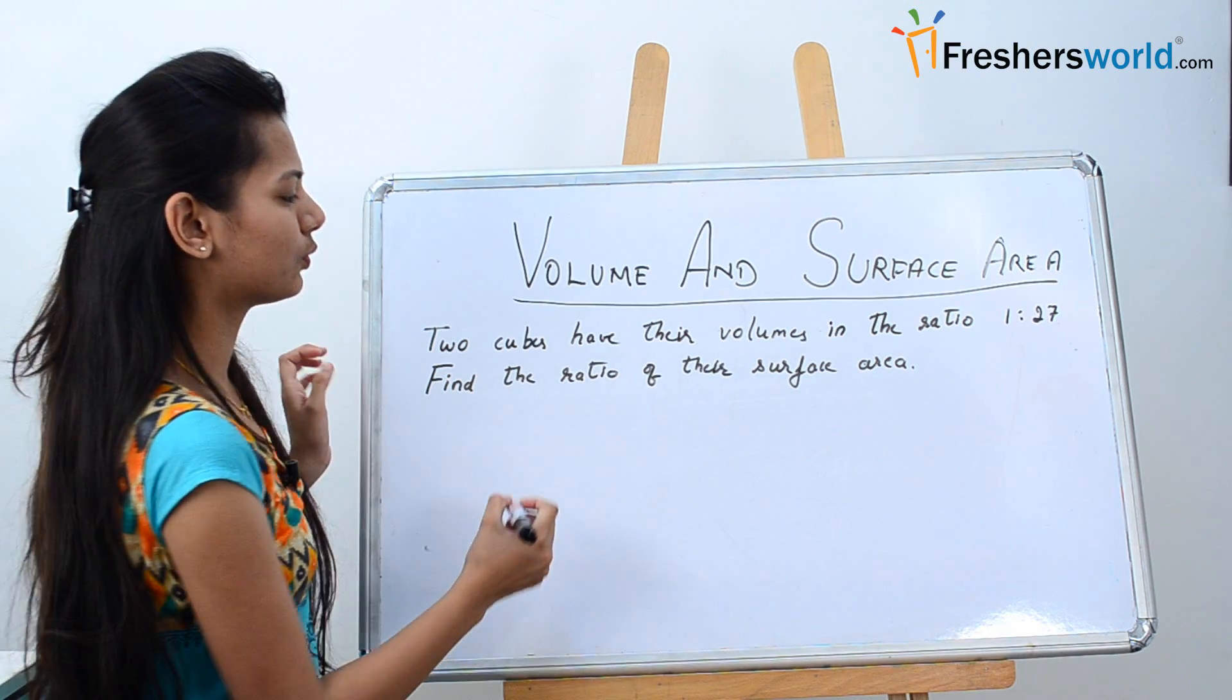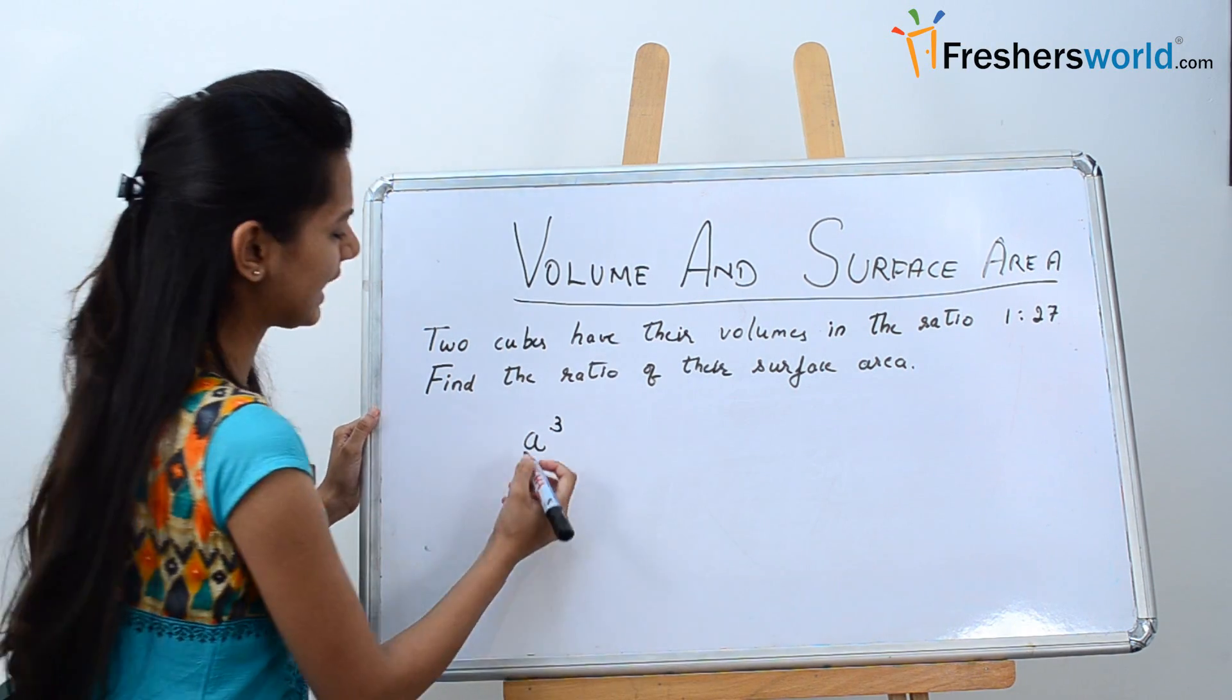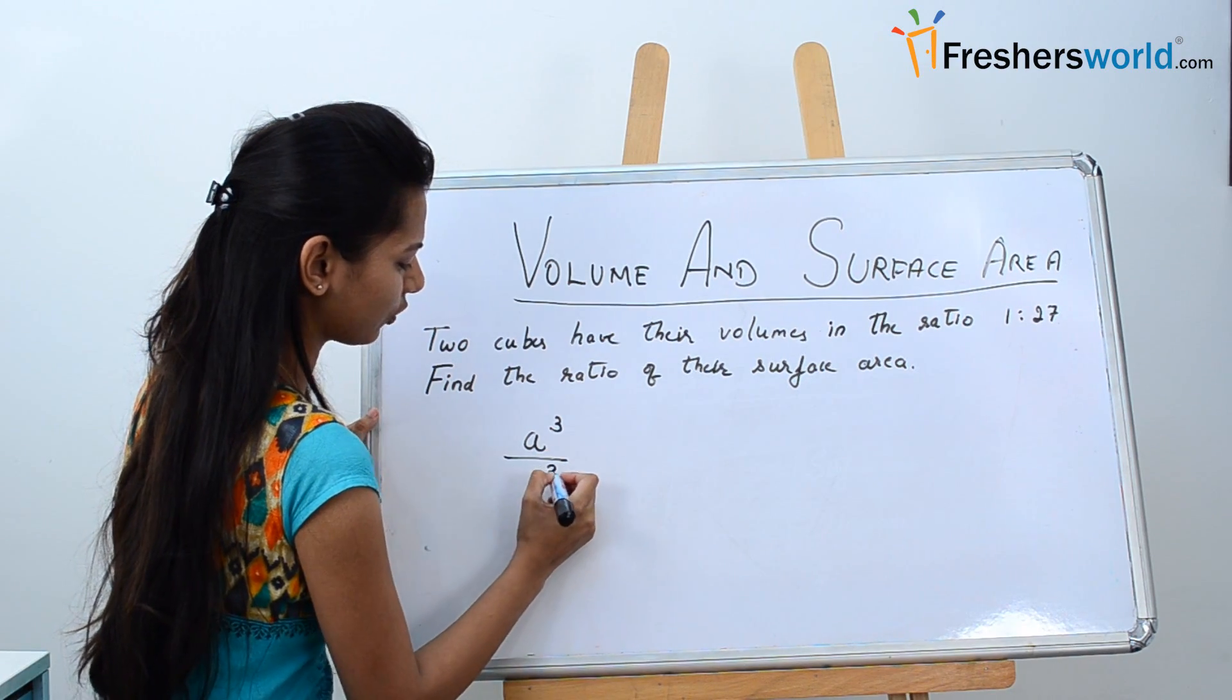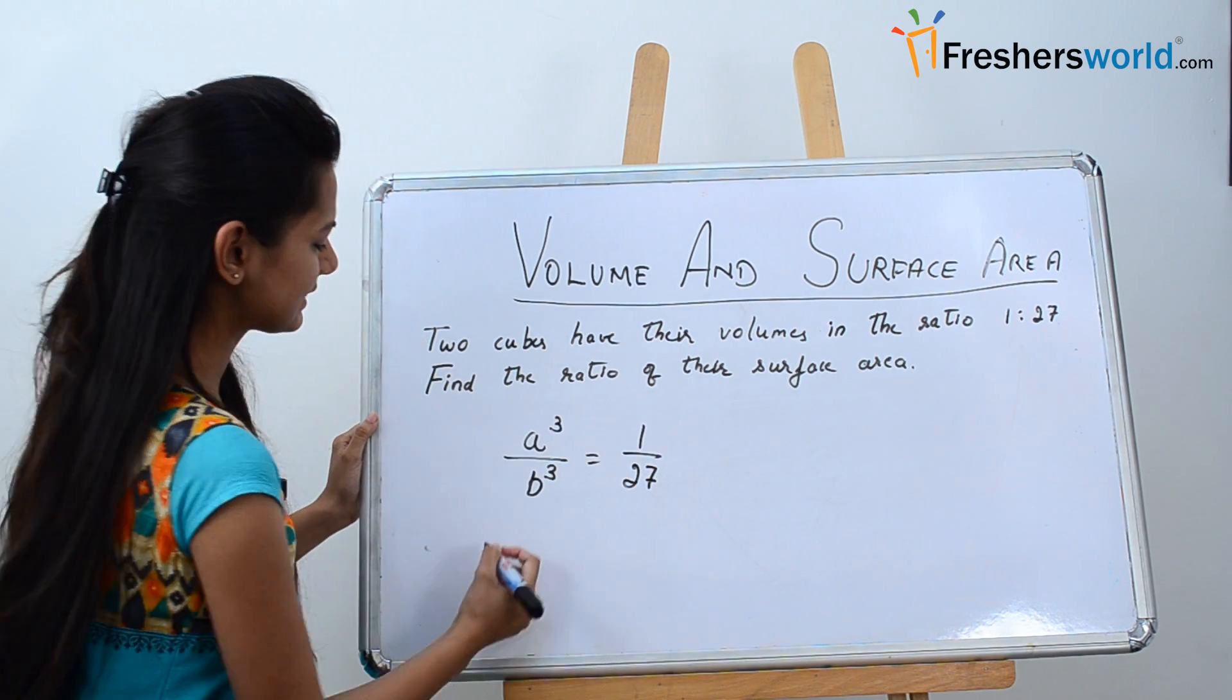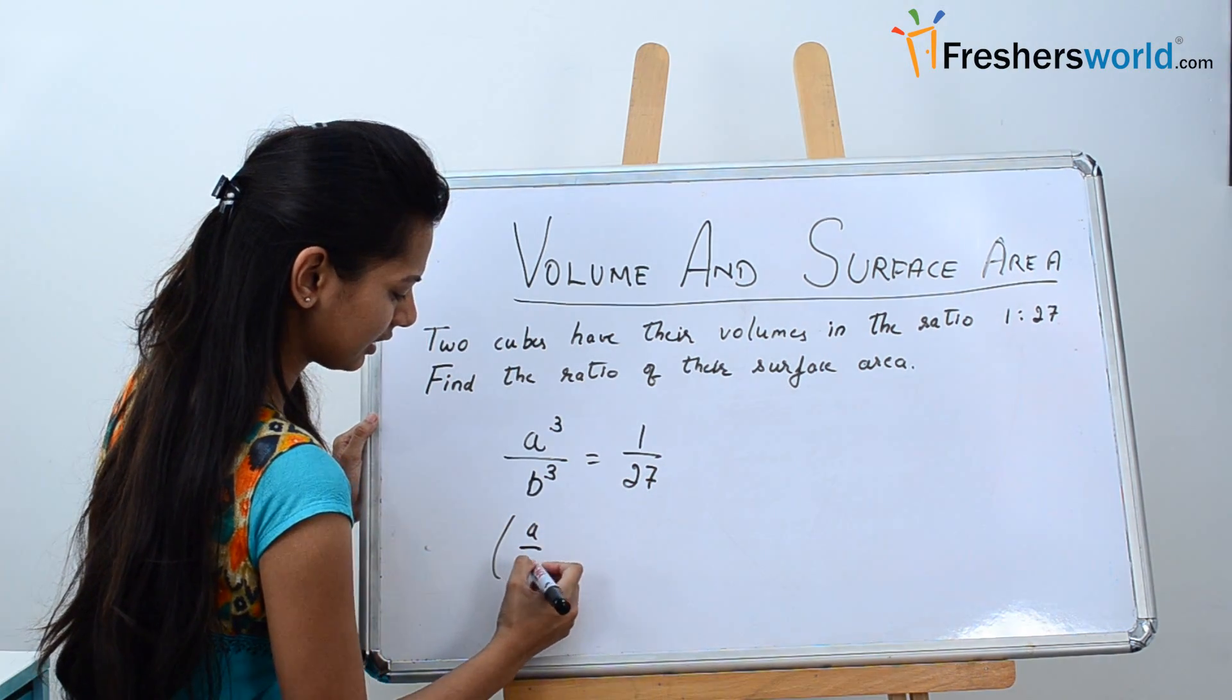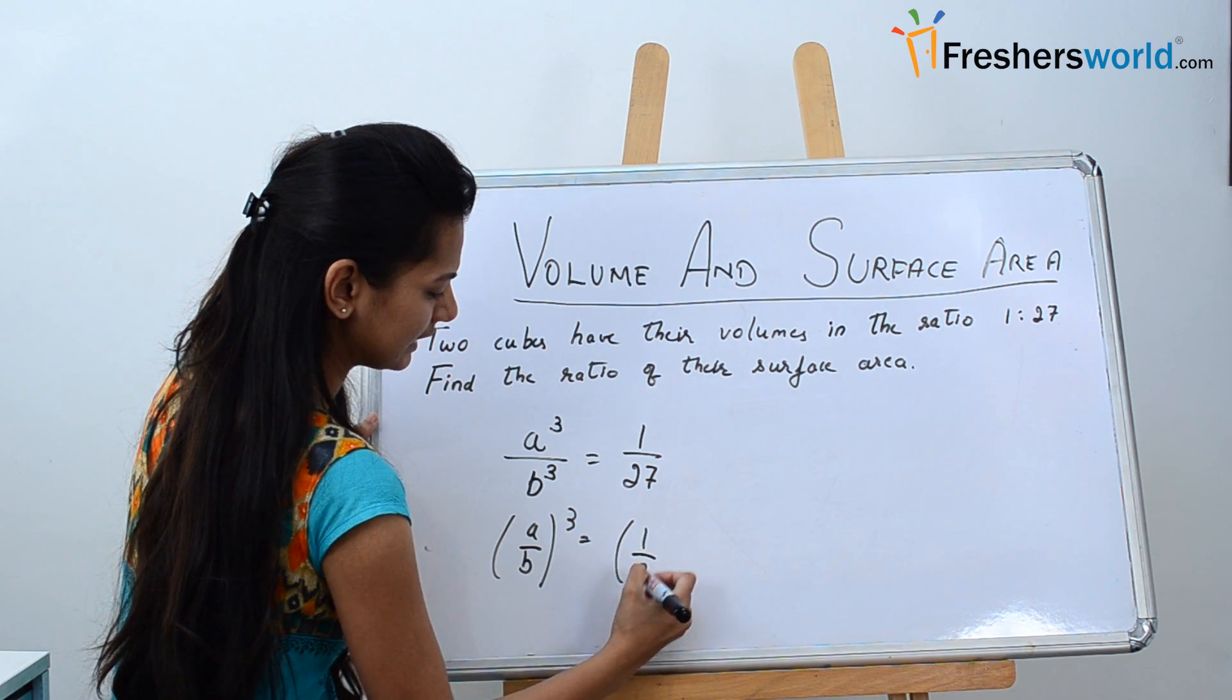Now what is the volume of the cube? The volume of the cube is a cubed. Let's say I have two cubes with edges a and b. So the ratio of their volume a cubed to b cubed is equal to 1 by 27. Now this can be written as a by b the whole cubed is equal to 1 by 3 the whole cubed.